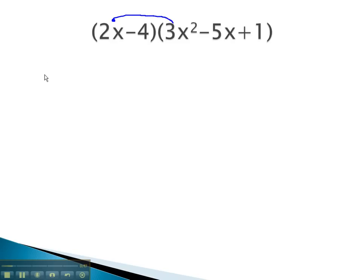2x times 3x squared is 6x cubed, adding the exponents. 2x times negative 5x is negative 10x squared. Continuing to distribute, we have 2x times 1, which is 2x.